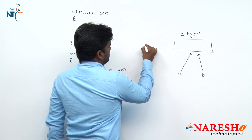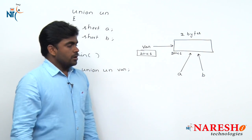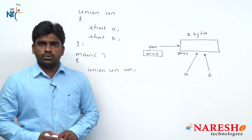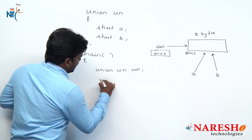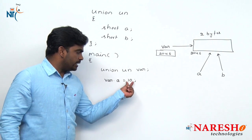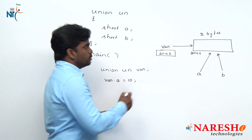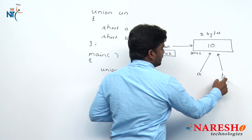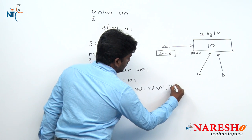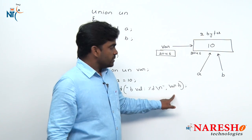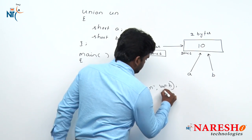Both A and B are pointing to the same location. VAR is pointing to this location by holding the block address. How can we access the elements of the union? Same accessor we are using just like structures — that is the dot operator only. VAR.A equals 10: we are storing a value 10 into the memory location A with the help of pointer VAR. The 10 will go and store into this memory. After storing the value of A, we are printing B value — printf B value, percentage d, VAR.B we are printing. What will it print? B is also pointing to the same memory location, so it prints the value 10.